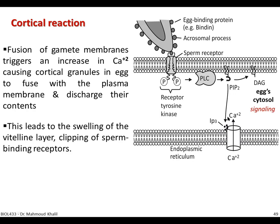As we will see in the next few slides, calcium is very important in the process of egg development. From this signaling pathway, the final event upon binding of the binding protein to the sperm receptor is the release of calcium into the cytosol of the egg. Subsequently, this leads to the swelling of the vitelline membrane and the clipping of the sperm-binding receptors.